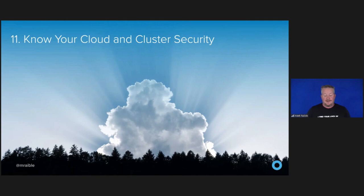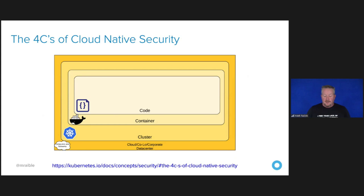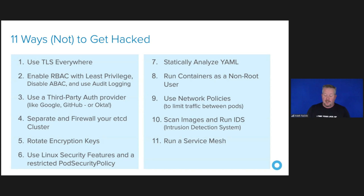If you're managing production clusters in the cloud, you're probably aware of the four C's of cloud-native security from Kubernetes.io — each one depends on the security of the layers in which they fit. The Kubernetes blog has a detailed post from Andrew Martin titled 11 Ways Not to Get Hacked. He offers tips to harden your clusters and increase their resilience. He recommends: use TLS everywhere, enable RBAC, do least privileges, do audit logging, use a third-party auth provider, separate and firewall your etcd cluster, rotate your encryption keys, use Linux security features, and run a service mesh.